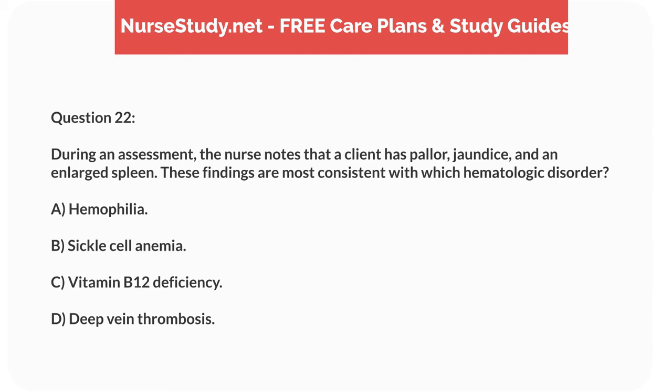Question 22. During an assessment, the nurse notes that a client has pallor, jaundice, and an enlarged spleen. These findings are most consistent with which hematologic disorder? A. Hemophilia. B. Sickle cell anemia. C. Vitamin B12 deficiency. D. Deep vein thrombosis.